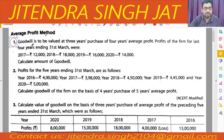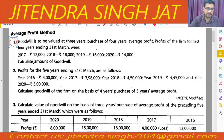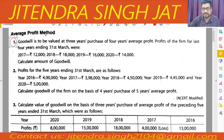Goodwill is to be valued at three years purchase of four years average profit. Profit of the firm for the last four years are given. Calculate the amount of goodwill. The four years are 2017, 2018, 2019, and 2020.